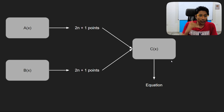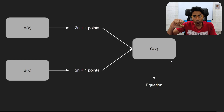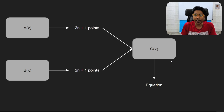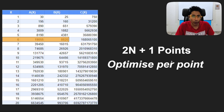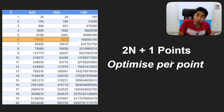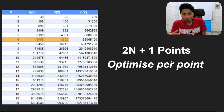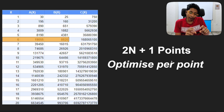The strategy is: take a(x) and b(x), find 2n+1 points for each, map them onto a graph, multiply corresponding points to get 2n+1 points for c(x), then use interpolation to recover the equation. Since we need at least 2n+1 points and our worst-case was n², each point evaluation must be fast. If each takes O(n) time we gain nothing over n². So we need a smarter approach.